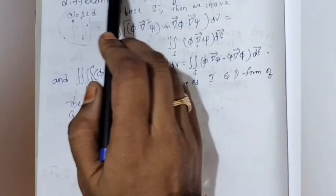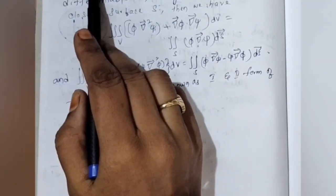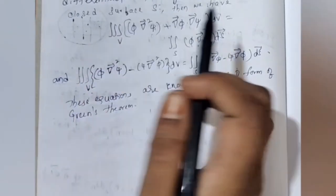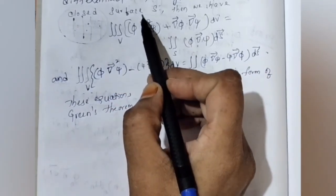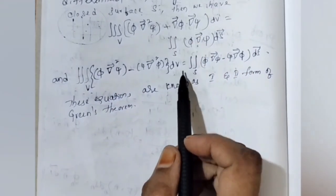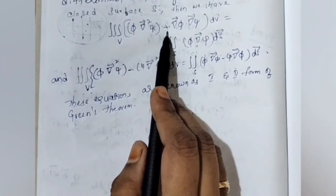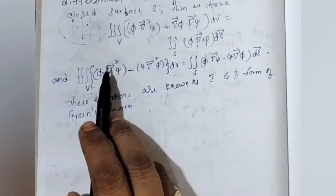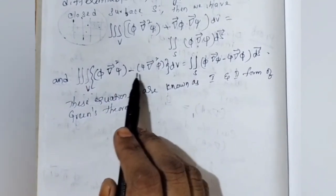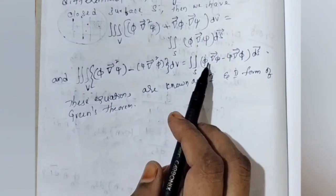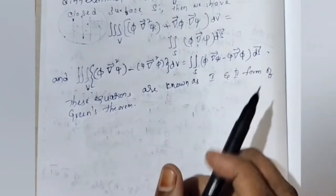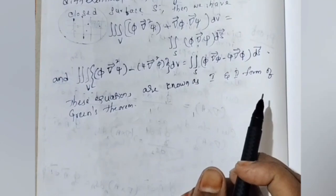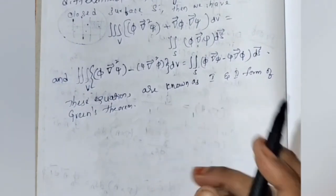Now, Green's theorem. If π and ψ are two scalar point functions such that these functions and their first derivatives are continuously differentiable in a region bounded by a closed surface, then we get two equations, known as Green's first and second form.